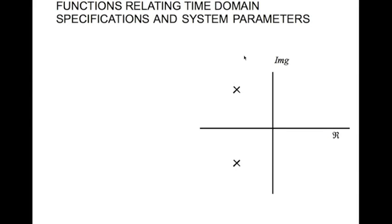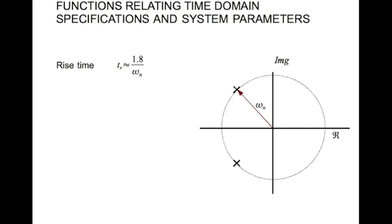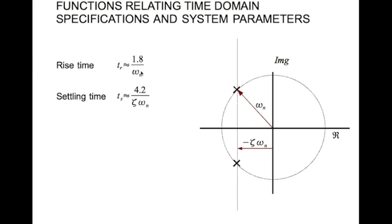Now let's look at the functions that relate the time domain specifications and system parameters. The first is rise time, and this is a very crude approximation — rise time is given by approximately 1.8 divided by omega n. The settling time is given by 4.2 divided by zeta omega n; this is the 4% settling time. The percentage overshoot is given by 100 times e to the power of minus pi zeta divided by the square root of 1 minus zeta squared.